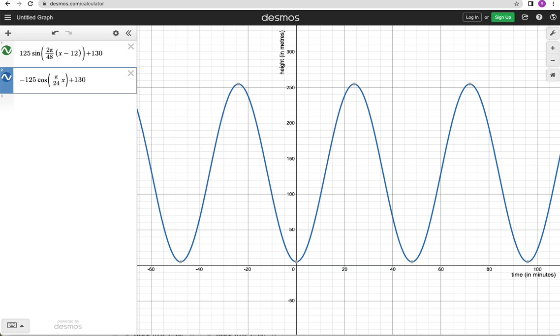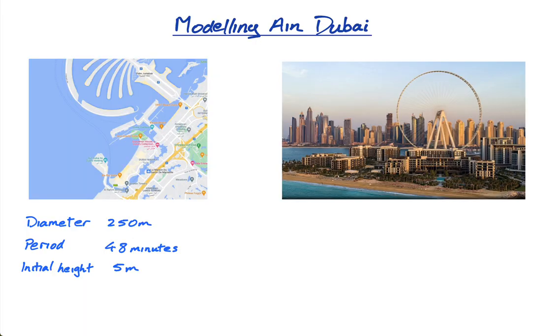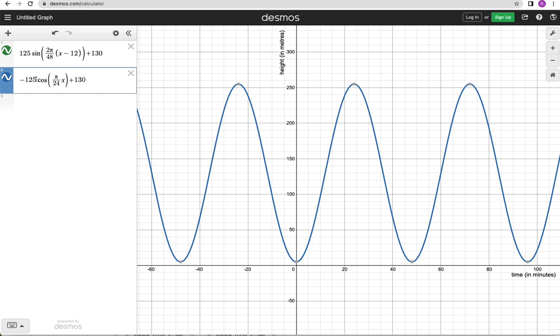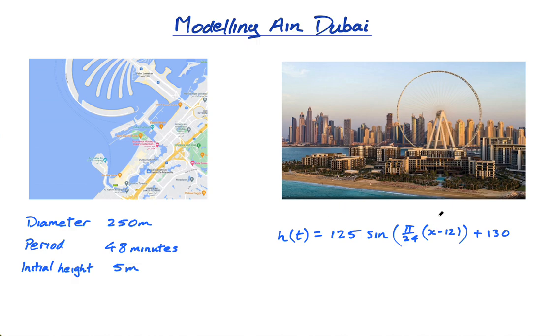Let's say we choose this one. My height h of t is equal to 125 sin of π over 24 times (t minus 12) plus 130. Perhaps you could say actually this is a neater equation - you might prefer to use that one, it's up to you. I have my model here - I'll stick with t for time.